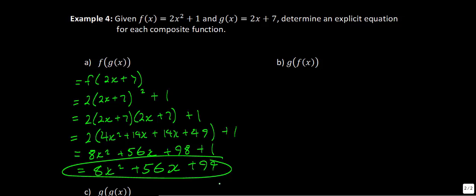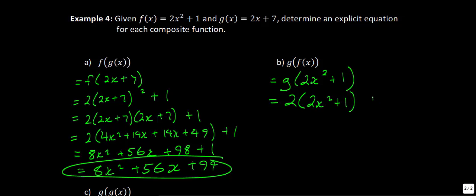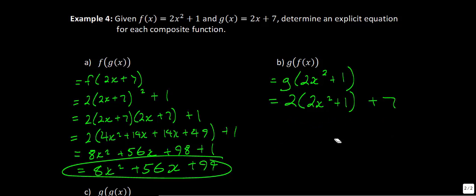Now for g of f of x, we take f of x and put it into g — the opposite direction. Everywhere we see an x in g of x, we put in 2x squared plus 1. So we have g of 2x squared plus 1, and applying the function g, which is 2x plus 7, gives us 2 times 2x squared plus 1, plus 7. Using the distributive property: 4x squared plus 2 plus 7. The 7 and the 2 are like terms, combining to give 4x squared plus 9.